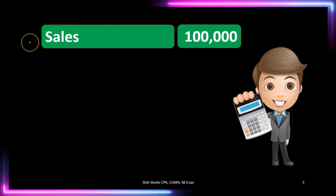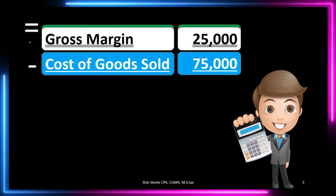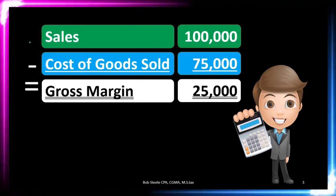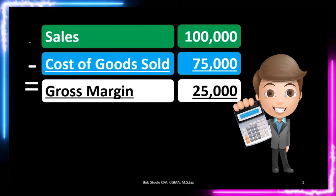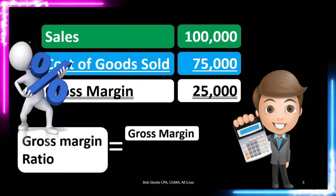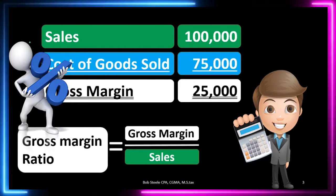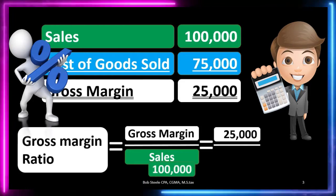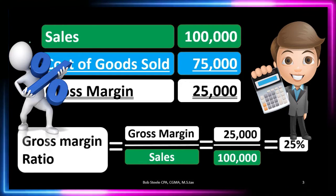Net sales is the total sales number in the sales section of an income statement, minus cost of goods sold. That gives us the gross margin number — in this case, $25,000 — typically shown at the top of a multi-step income statement. To get the gross margin ratio percentage, we take $25,000 divided by the sales number of $100,000, which gives us 0.25.